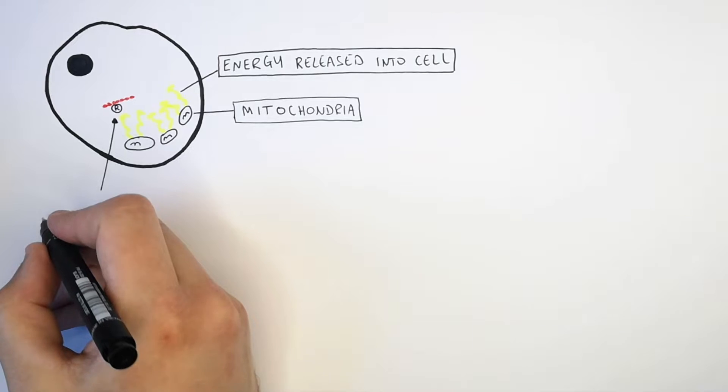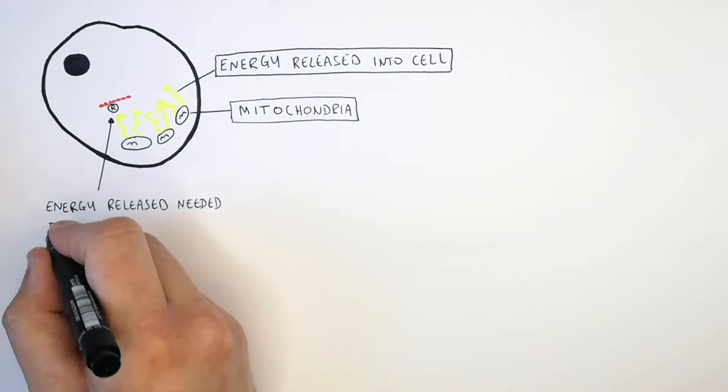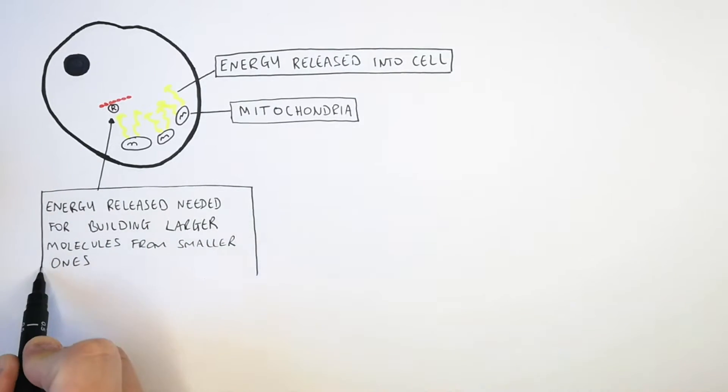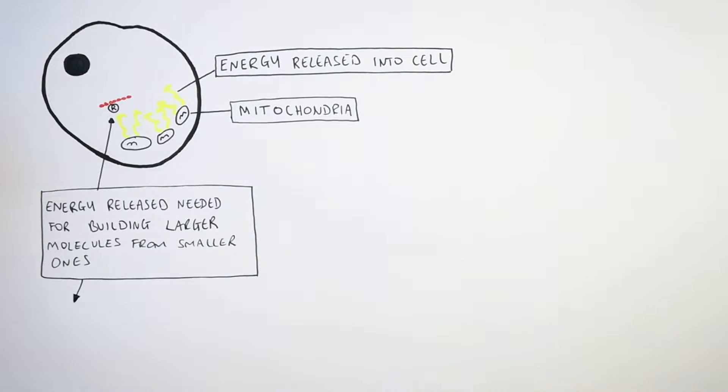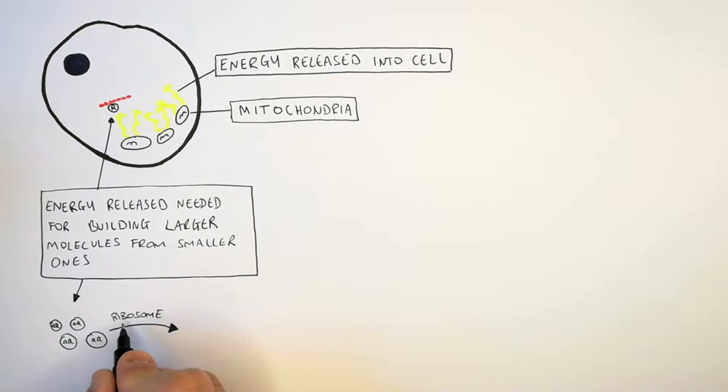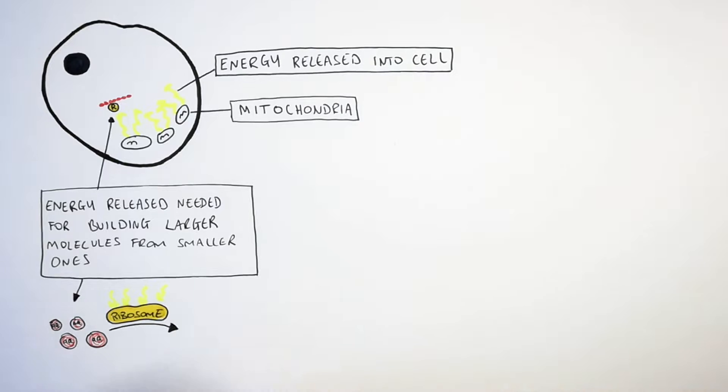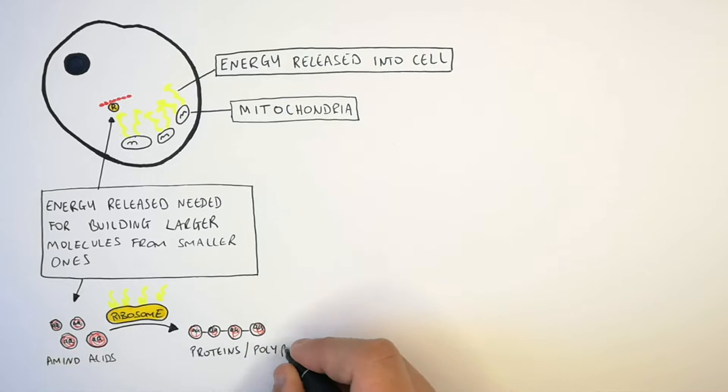The energy released is needed for building larger molecules from smaller ones. You have individual monomers of amino acids, then the energy is transferred to the ribosomes, where the ribosomes build larger polypeptide chains or amino acid chains from the amino acids themselves.